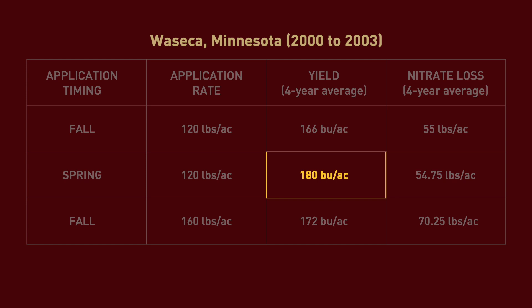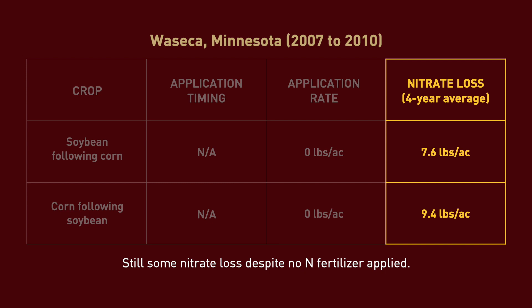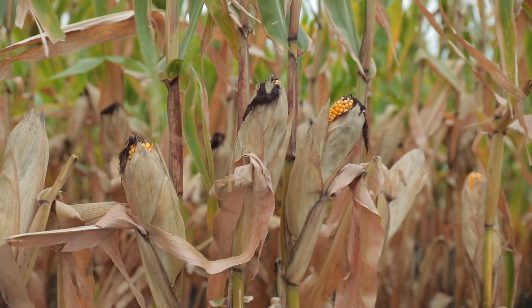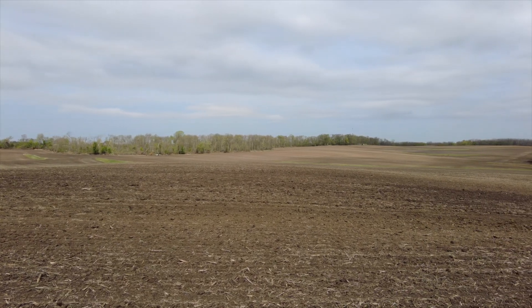The higher rate of fall-applied nitrogen results in significant N loss. Additionally, if we look at the soybean year and corn that received no N fertilizer, losses are still in the neighborhood of 10 pounds per acre, even though no fertilizer was applied. This is because organic matter mineralizes and releases nitrogen in the soil.